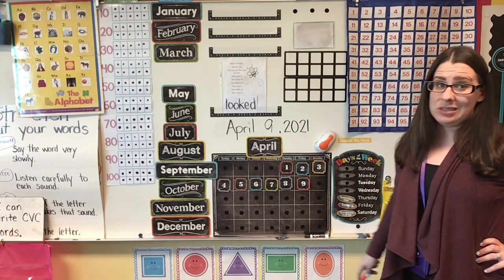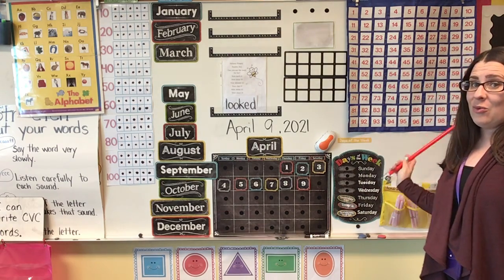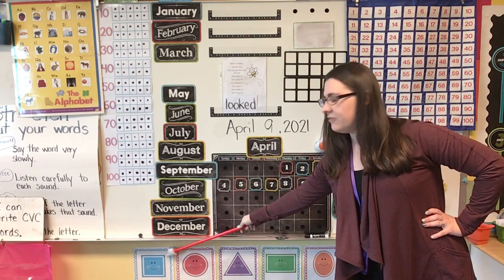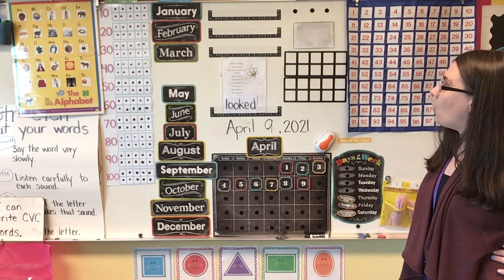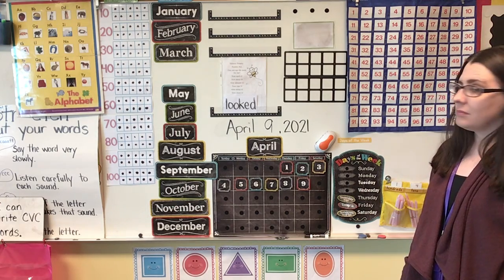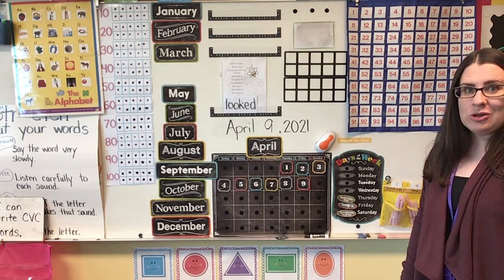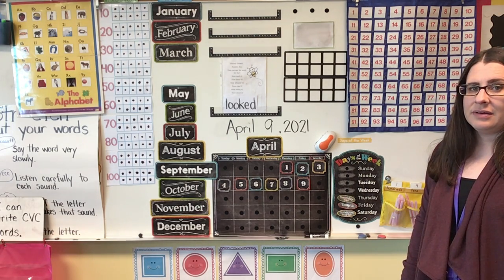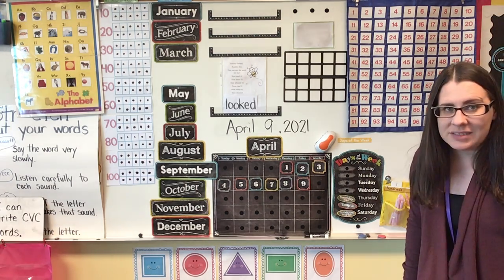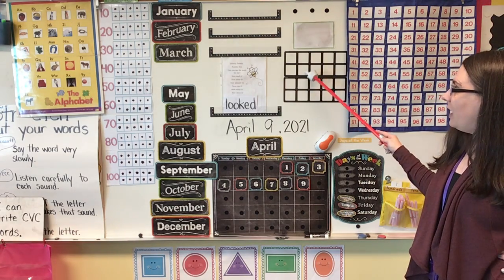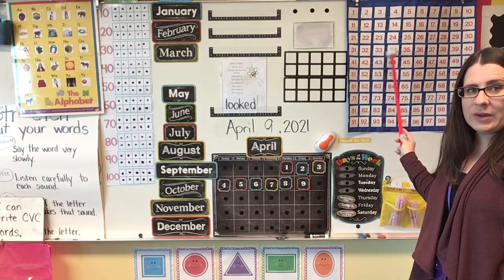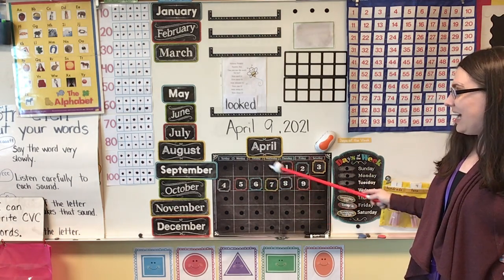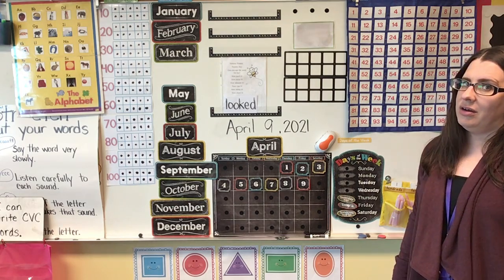I want you to use what you see on your screen with the calendar and see if you can find something that is the shape of a square. Do you see a square anywhere? They're all over the place, aren't they? Look right here inside our 10 frame — there's a whole bunch of squares. You might have noticed the squares on the 100s chart or even on the calendar. Good hunting.